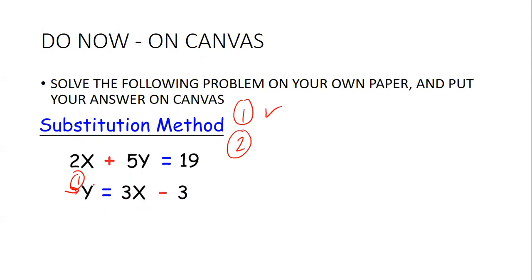Step two is to take that and substitute it into the other equation. So you're taking all of this and substituting in for the other variable. And it's a y by itself, not an x by itself. So if x isn't by itself, why are you plugging in for x? You don't. So we're going to substitute in for y. So we have 2x plus 5 times 3x minus 3 equals 19.